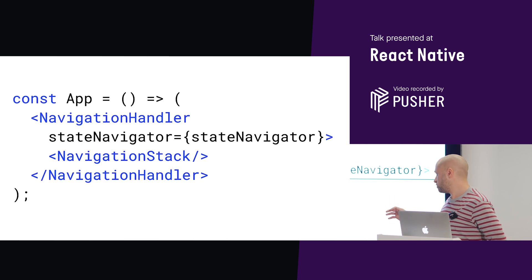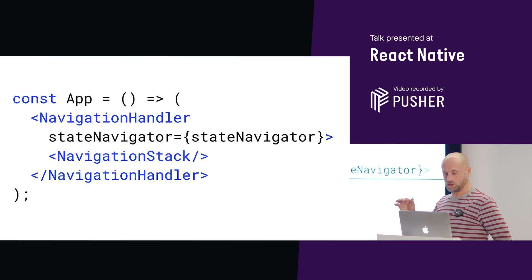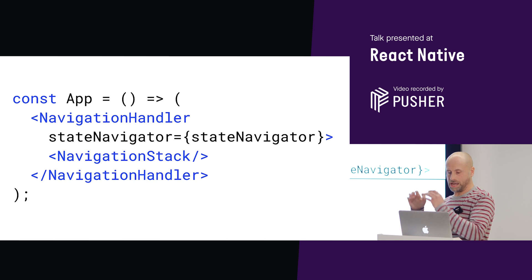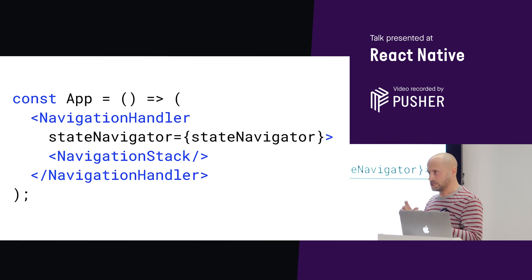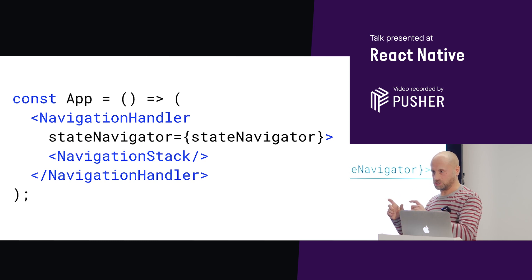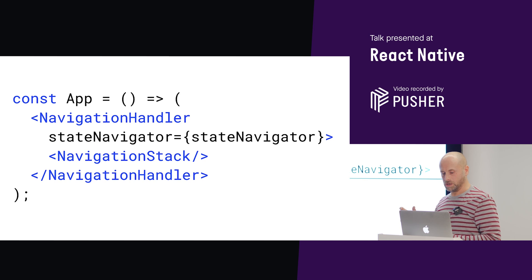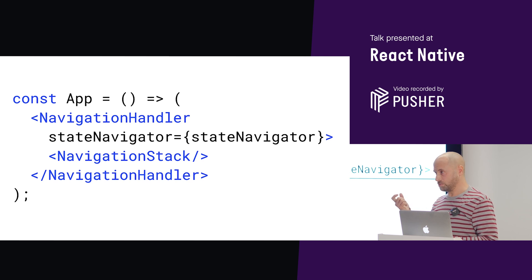The final stage is to render our app. The NavigationHandler component puts our state navigator into React context so we can access it from within any of our scenes. The important component is the NavigationStack component — it renders the stack of scenes as the user navigates around the app. And it's the NavigationStack component that calls into those native navigation APIs to give us 100% native navigation on both platforms.